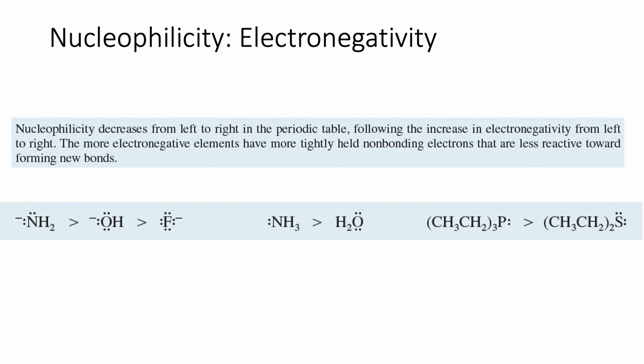So nitrogen is always going to be more nucleophilic than oxygen, and oxygen is always going to be more nucleophilic than fluorine. Going to another row in the periodic table, phosphorus is more nucleophilic than sulfur because phosphorus is less electronegative than sulfur. Electronegativity increases on the periodic table up and to the right, so nucleophilicity increases the other way — down and to the left.